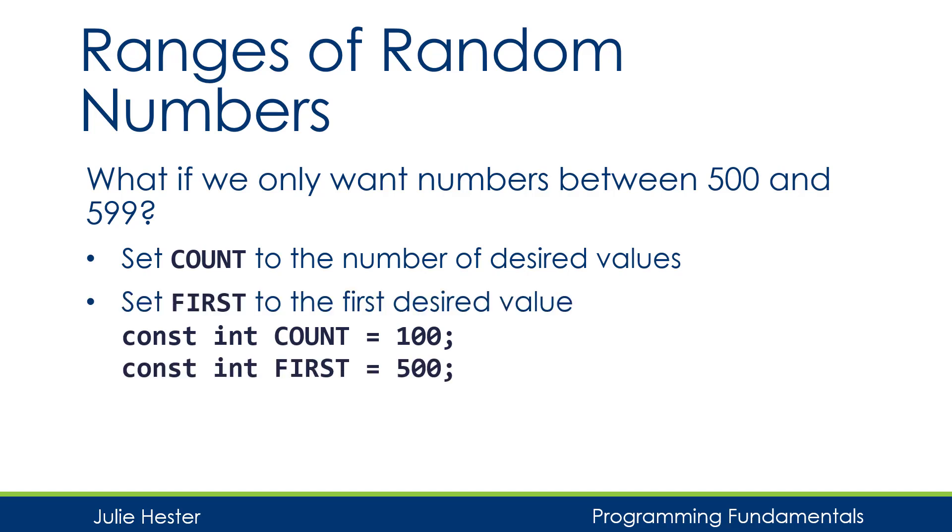Then I'm going to create a second named constant named FIRST. And FIRST is going to be set to my first desired value. In this case, 500 is the first number I want to use in my random number range.